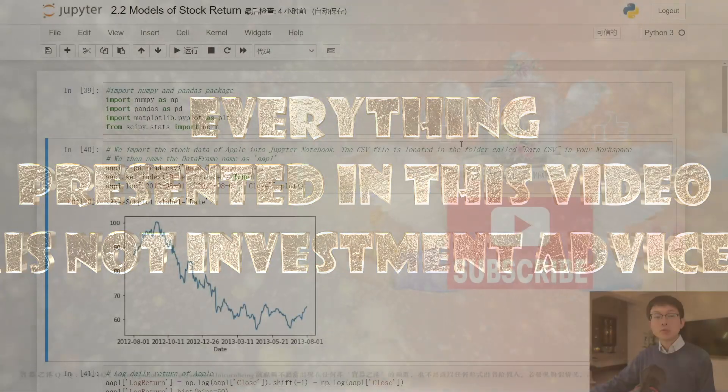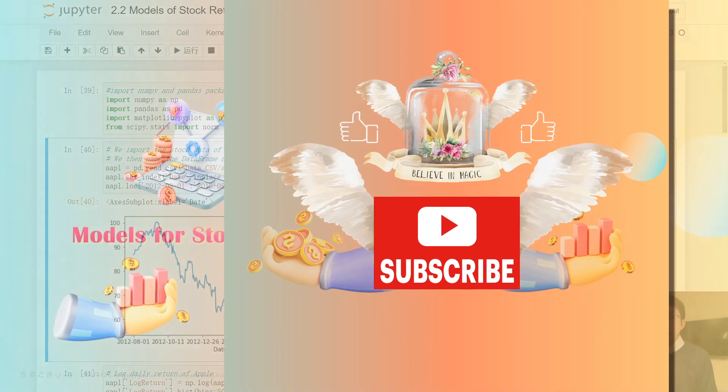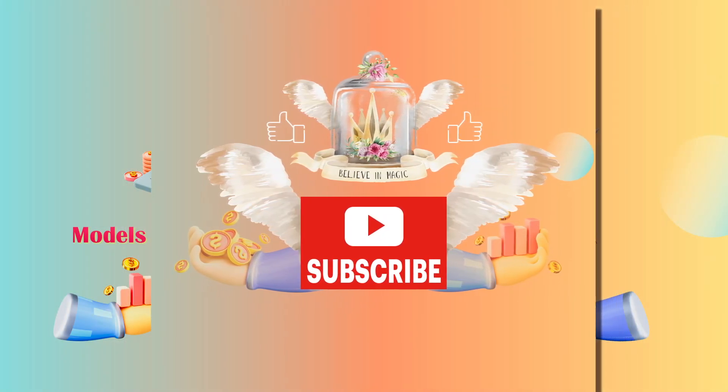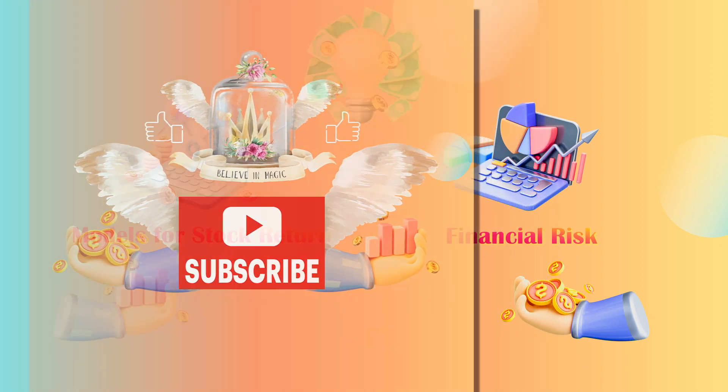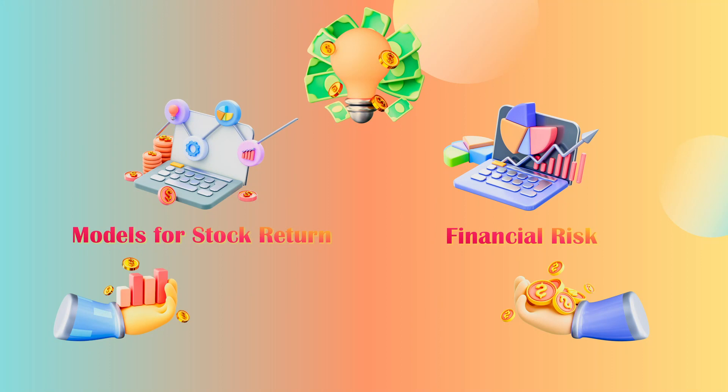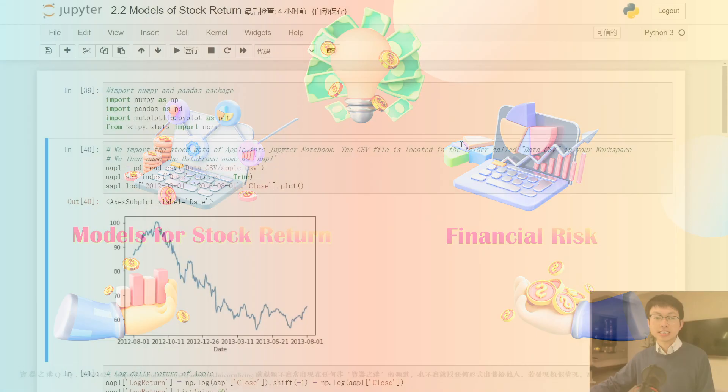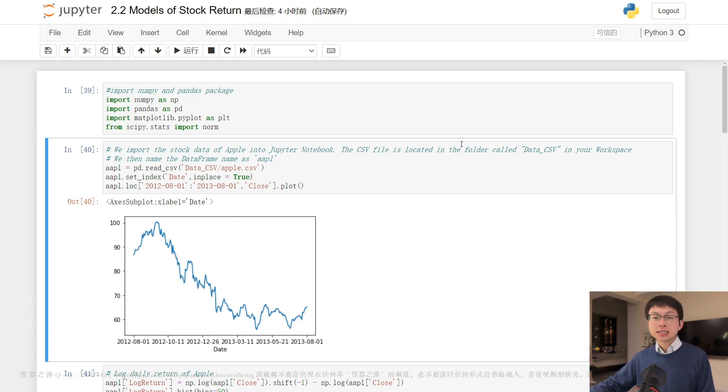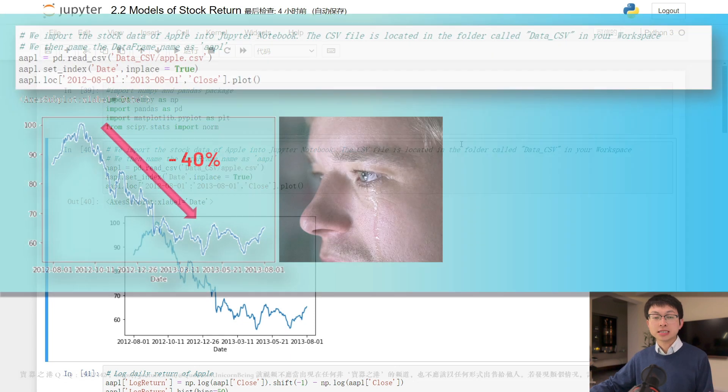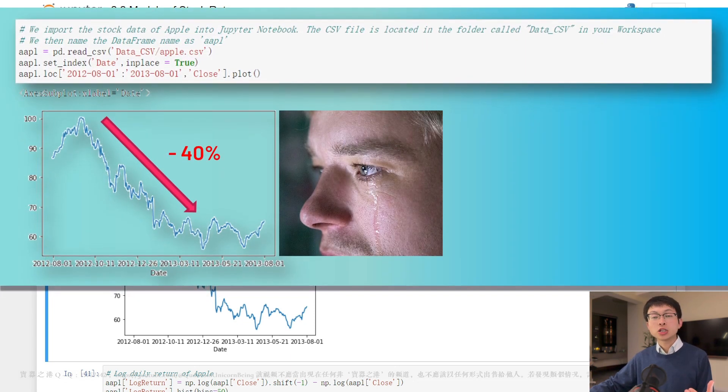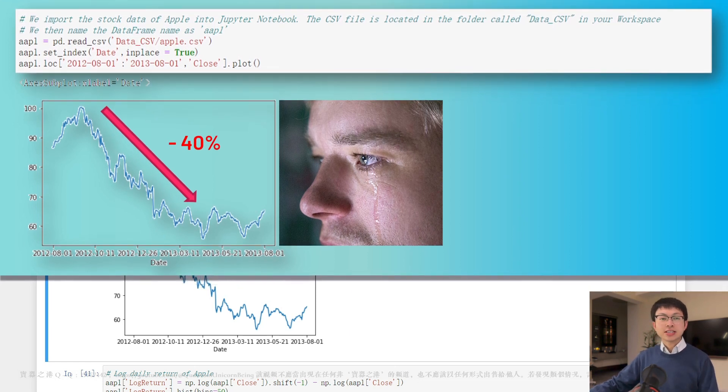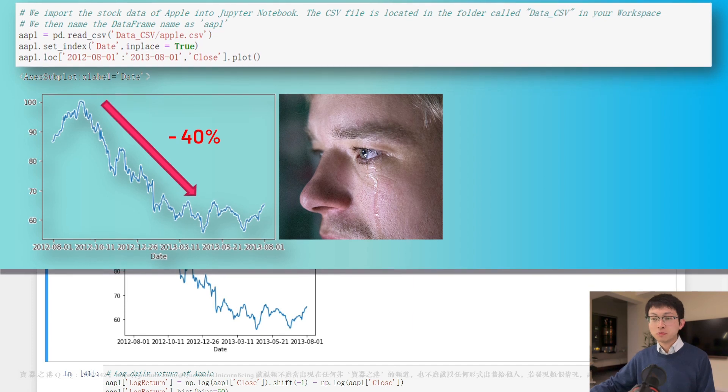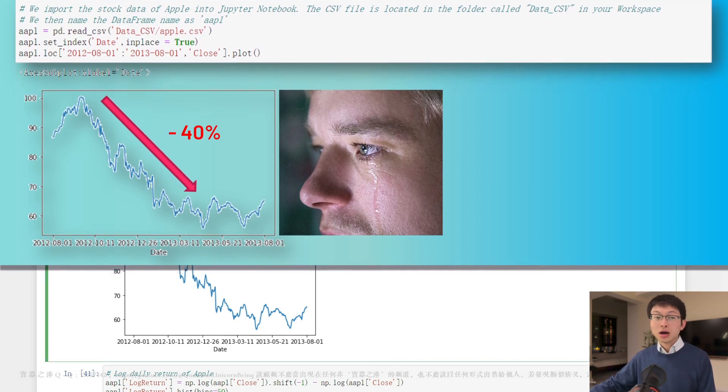In this video, we will explore the distribution or model for stock returns and demonstrate how it can aid in identifying financial risk. Knowing the distribution of stock returns is critical in effective risk management. For instance, consider the case of Apple, whose stock price dropped over 40% from August 2012 to May 2013, roughly within a year.